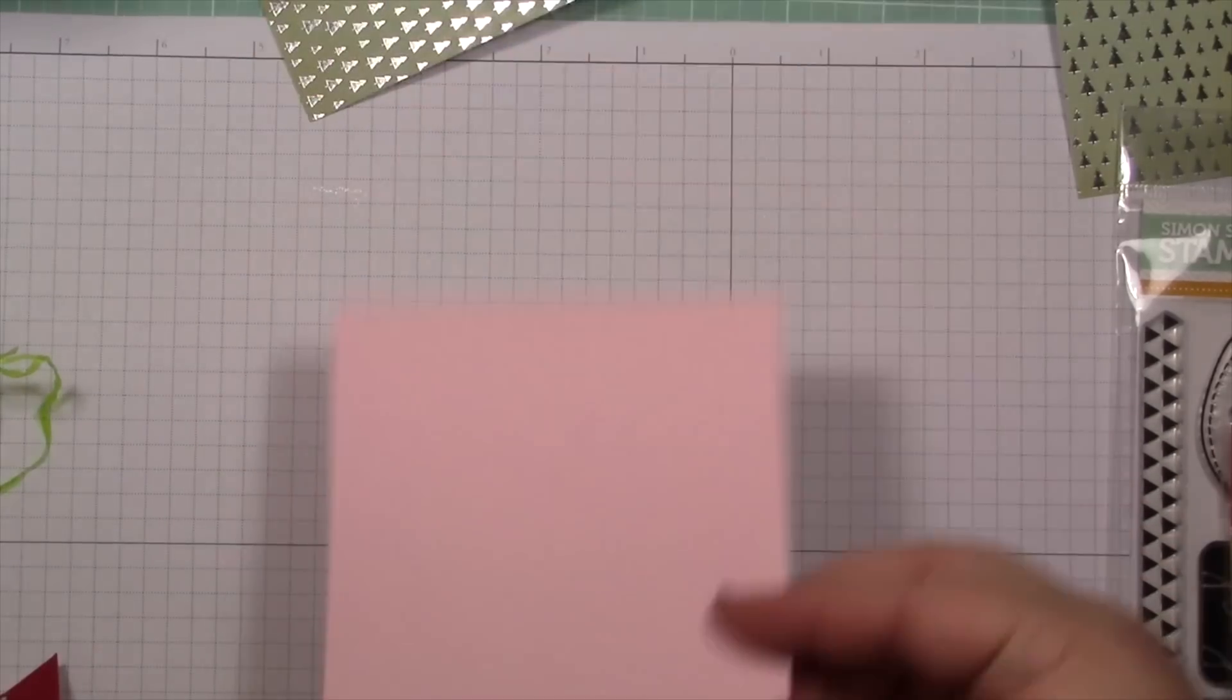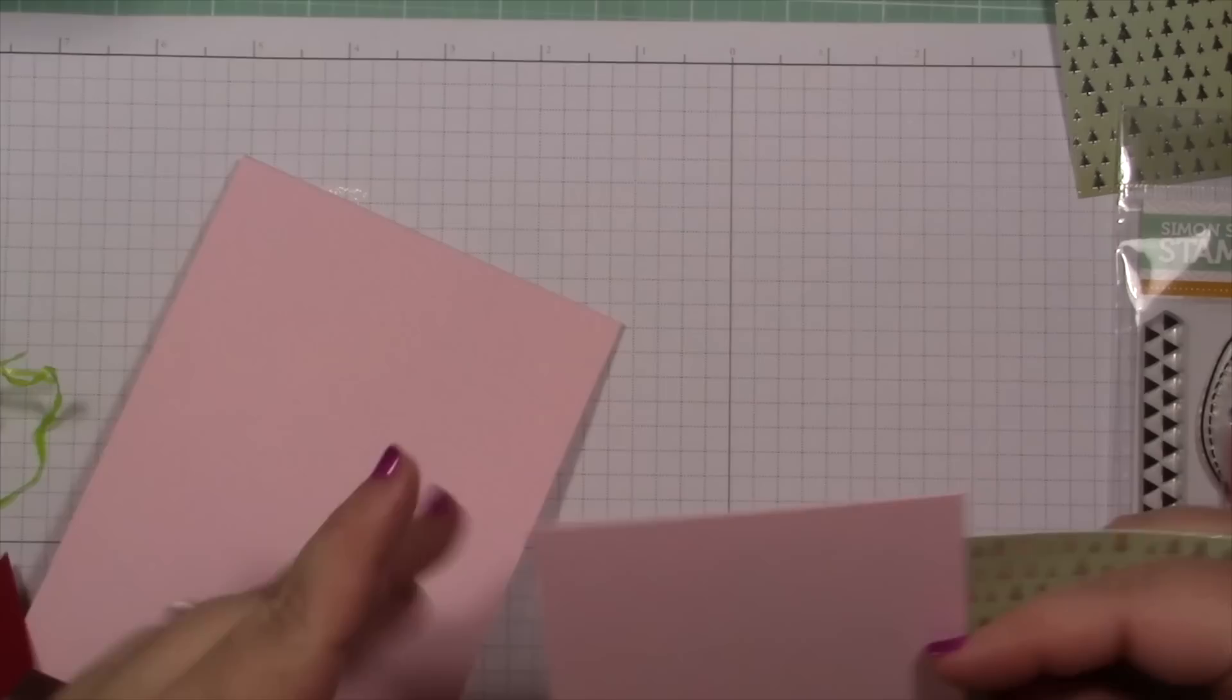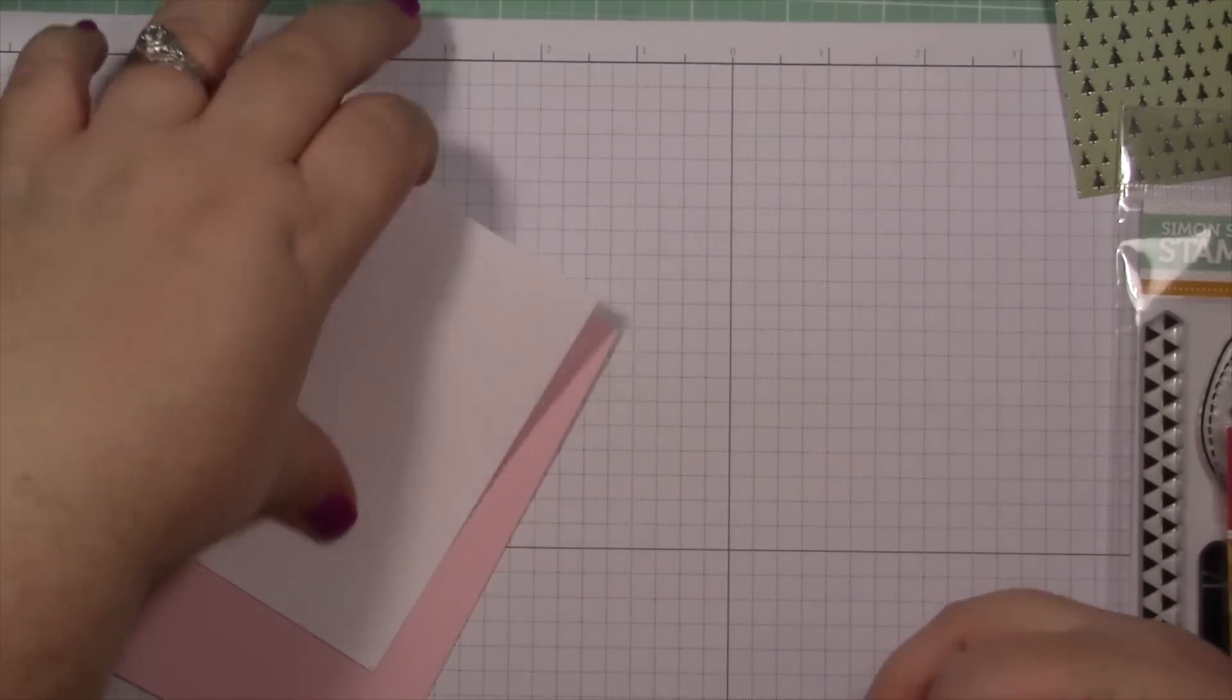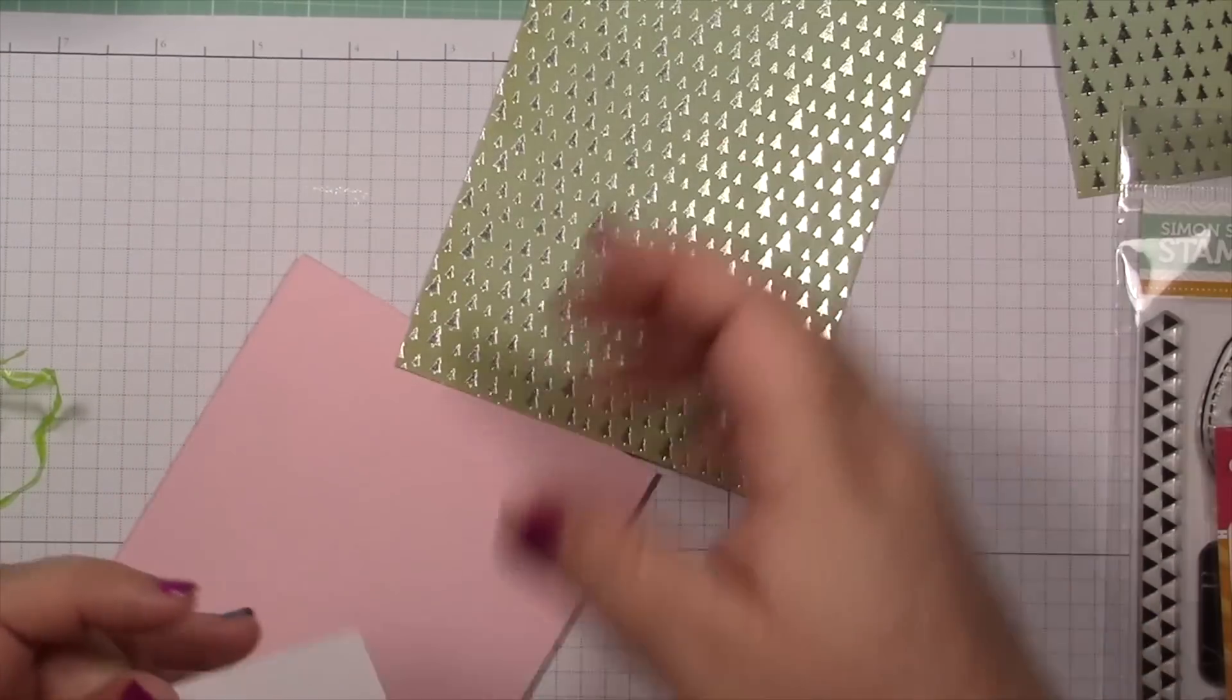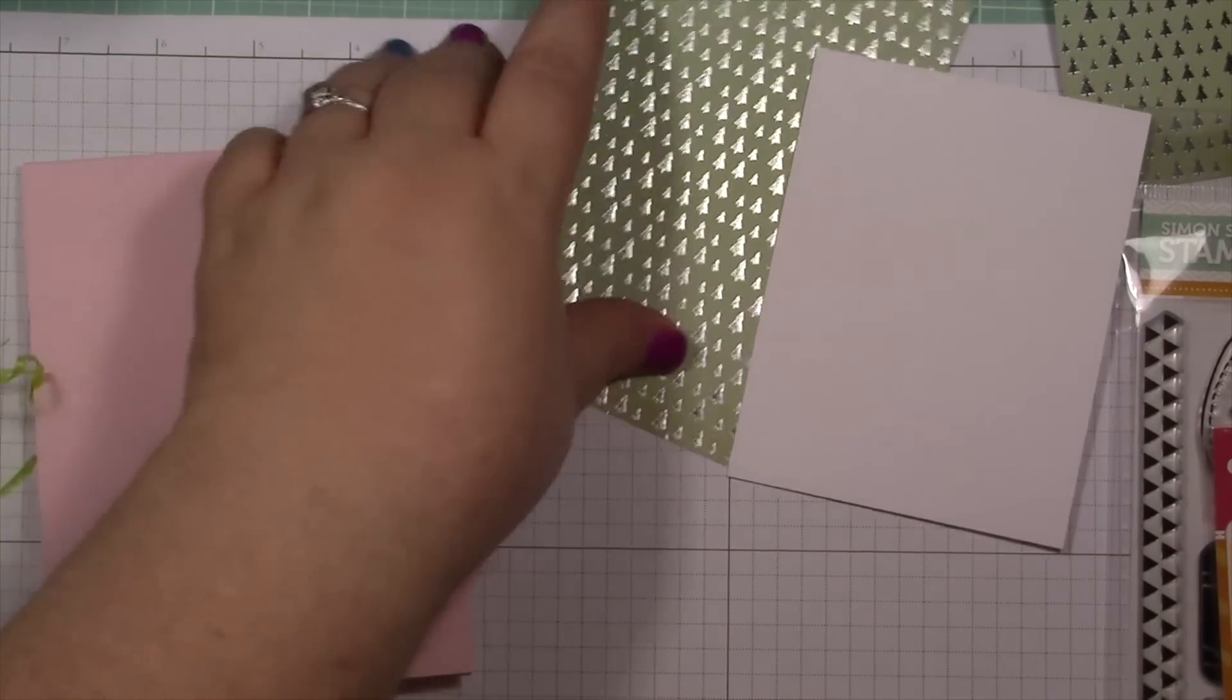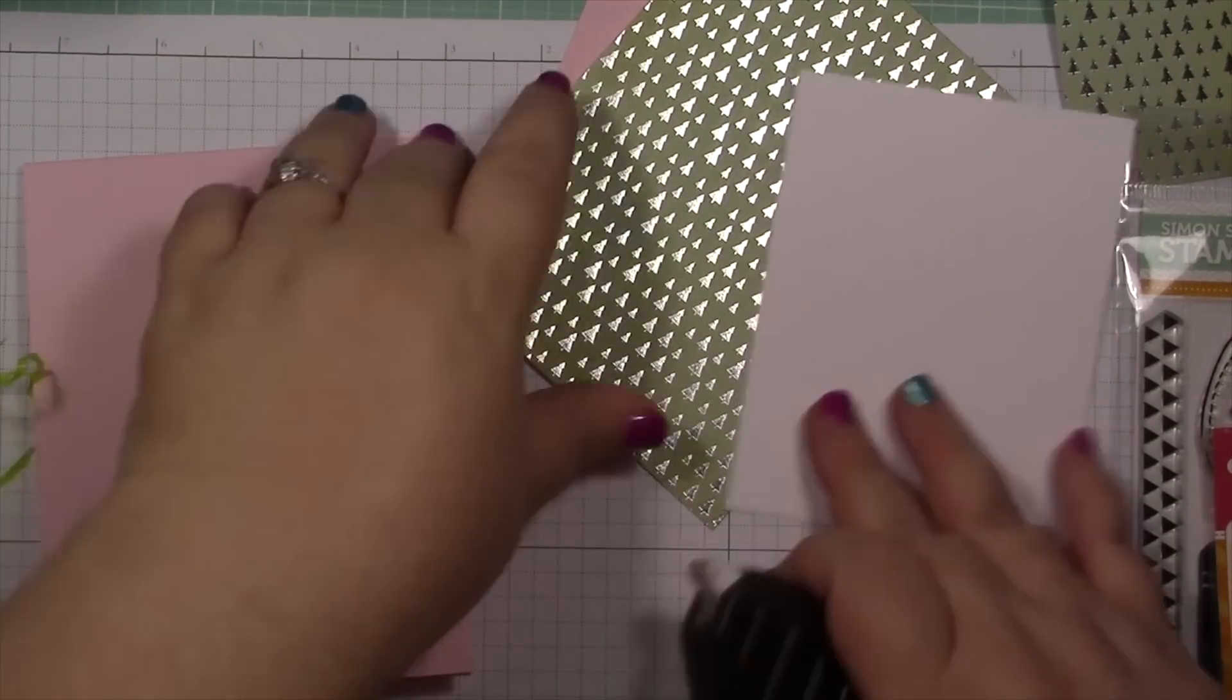The new in colors are fantastic. There's one that I'm like, I don't know, but I already have some ideas on other colors to use it. And you guys know me, I love color for sure. So we have our card base, we have our two layers, and then we have our focal panel. Let's go ahead and adhere our papers.